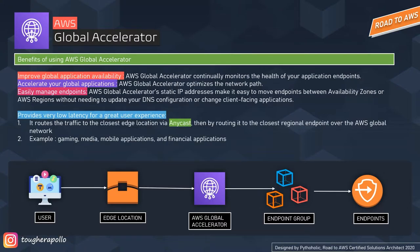Let's talk about some benefits of Global Accelerators. First, it improves global application availability — AWS Global Accelerator continuously monitors the health of your application endpoints and redirects traffic to healthy endpoints in less than 30 seconds. Second, it accelerates your global applications — it optimizes the network path using the huge AWS global network. No matter where your users are located, Global Accelerator intelligently routes traffic to the endpoint that provides the best application performance, choosing one that is reachable, stable, and closest in proximity.